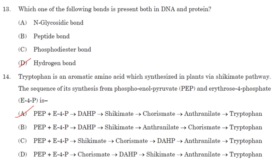Which one of the following bonds is present both in DNA and in protein? N-glycosidic bond is present in DNA and RNA, where the nitrogenous base is attached to the sugar — not DNA and protein. Peptide bonds join amino acids to form protein. Phosphodiester bonds are found in DNA and RNA. Hydrogen bonds are found in both DNA and protein. So the answer is option D, hydrogen bond.